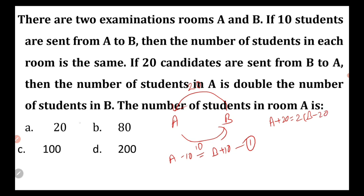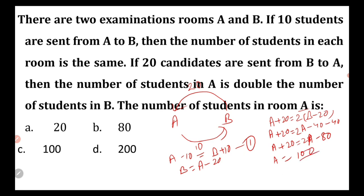The number of students in room A: A plus 20 is equal to 2A minus 40, minus 40. Then A plus 20 is equal to 2A minus 80. And then A is equal to 100. Hence the answer is option number C, and that is 100.